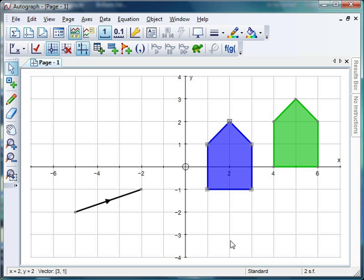Now, what's really nice about this, the way Autograph does this, is I can actually grab the tail of this vector and I can drag it over here to show that every single point has been translated by the same vector, which is quite a powerful tool.